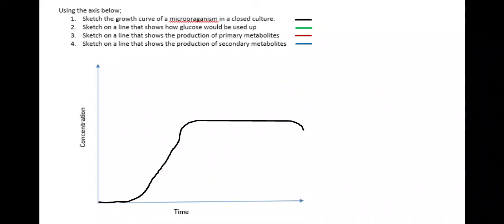This is the standard growth curve. It doesn't quite go into the death phase, it just starts the death phase here. This is how glucose will be used up because don't forget it's a closed culture, so the glucose will be used up in aerobic respiration. We've then got primary metabolites, which are produced at the same rate as bacterial growth.